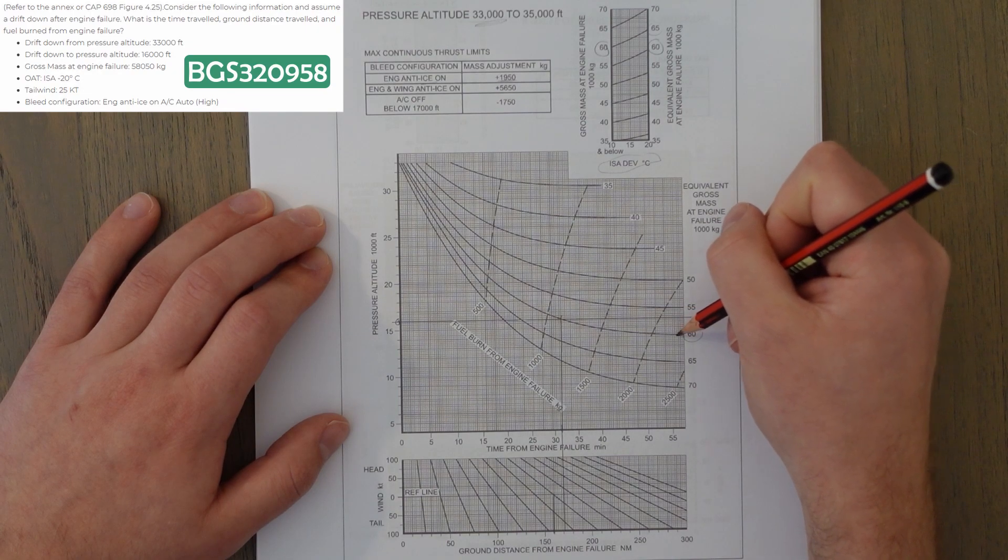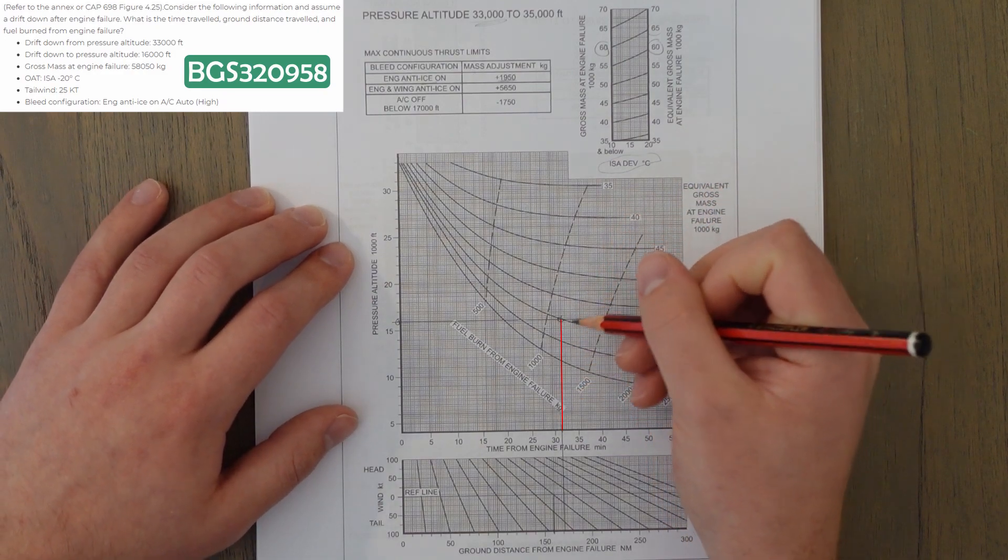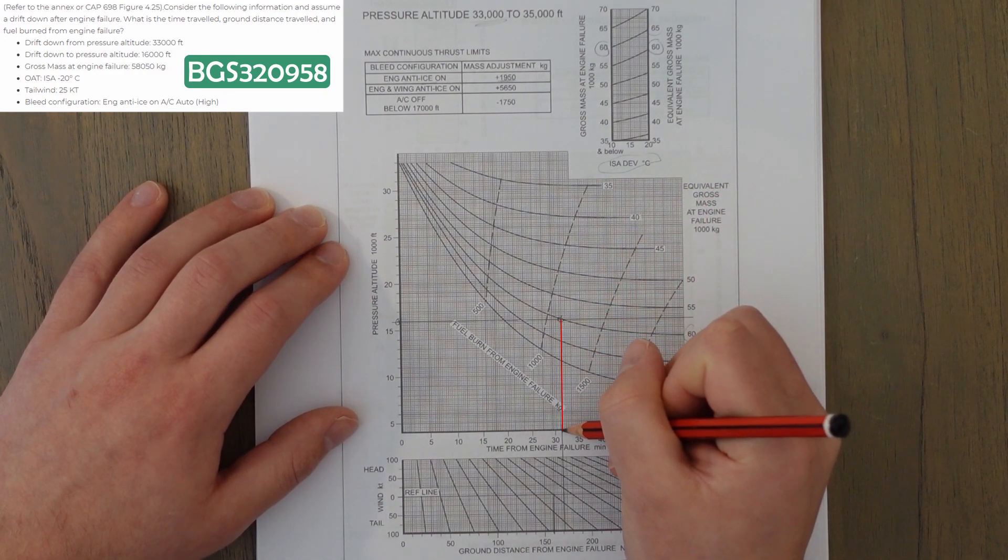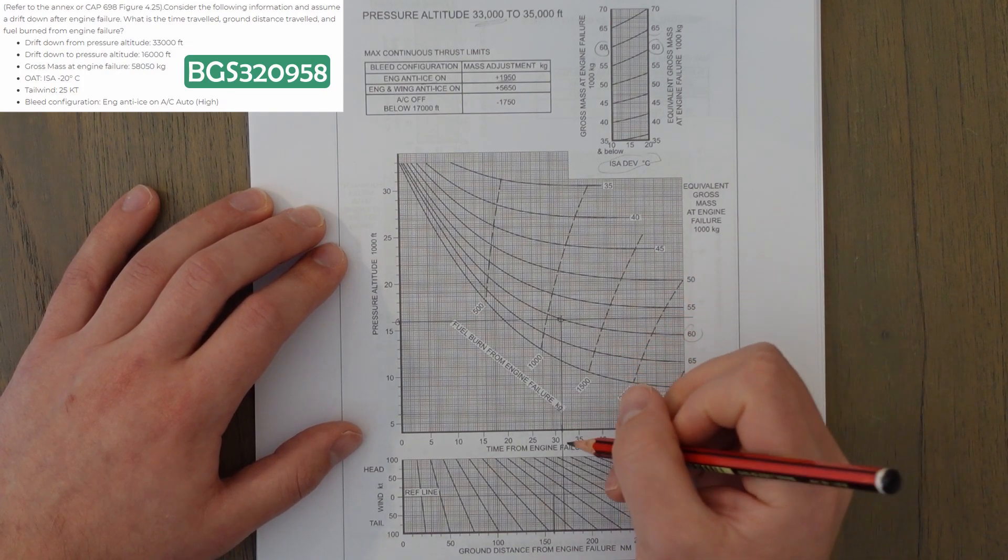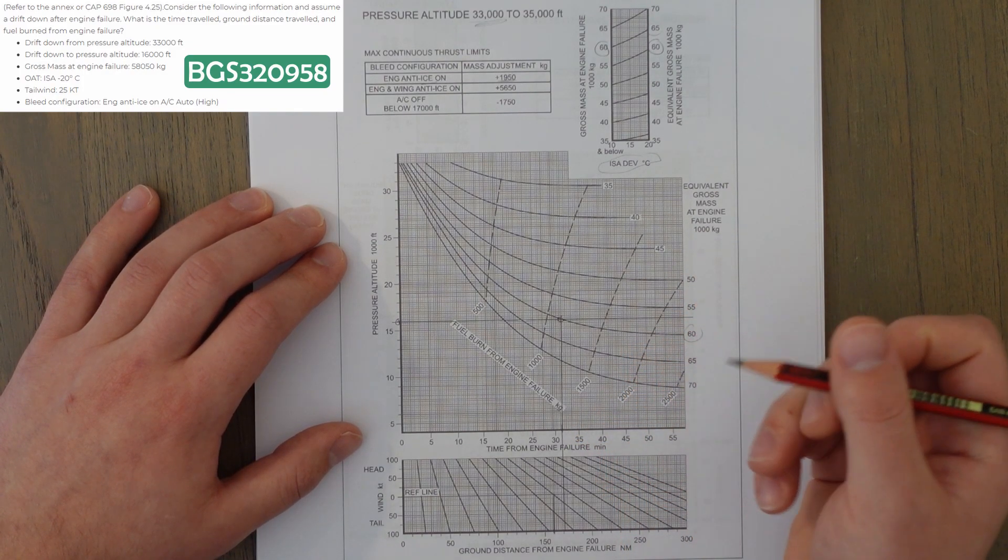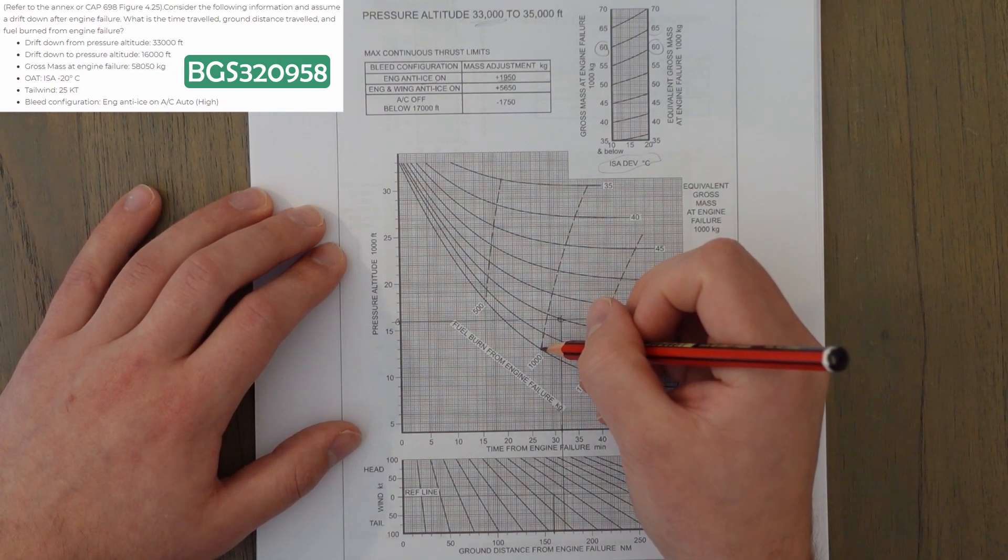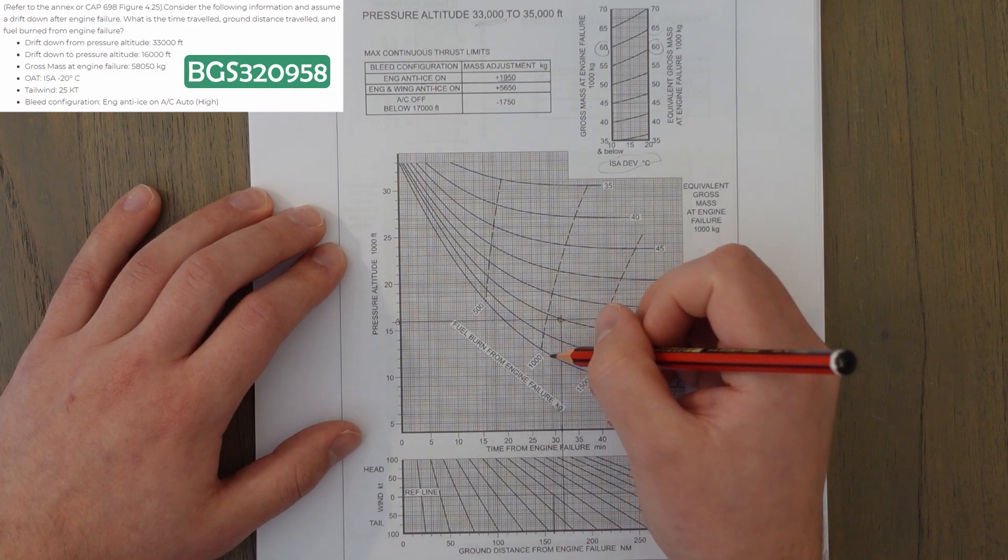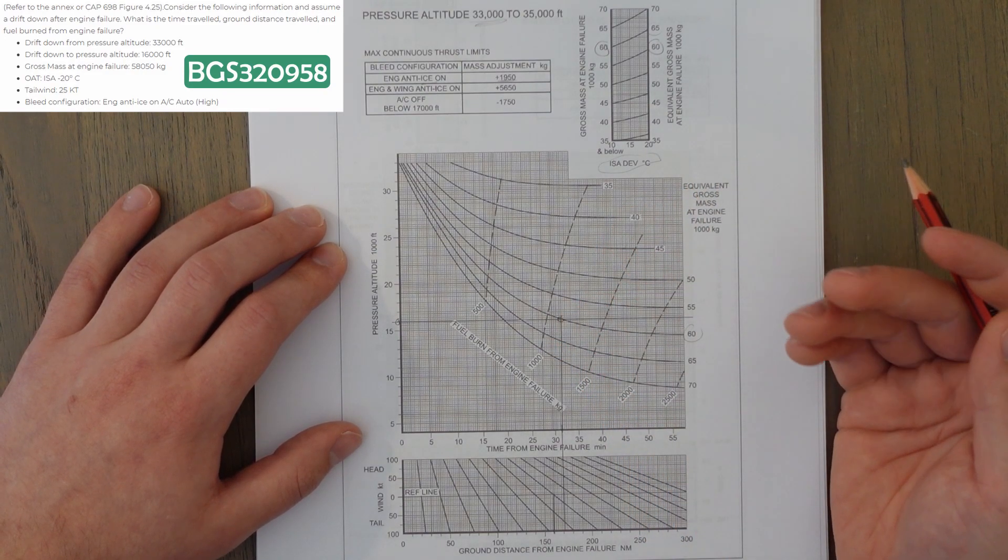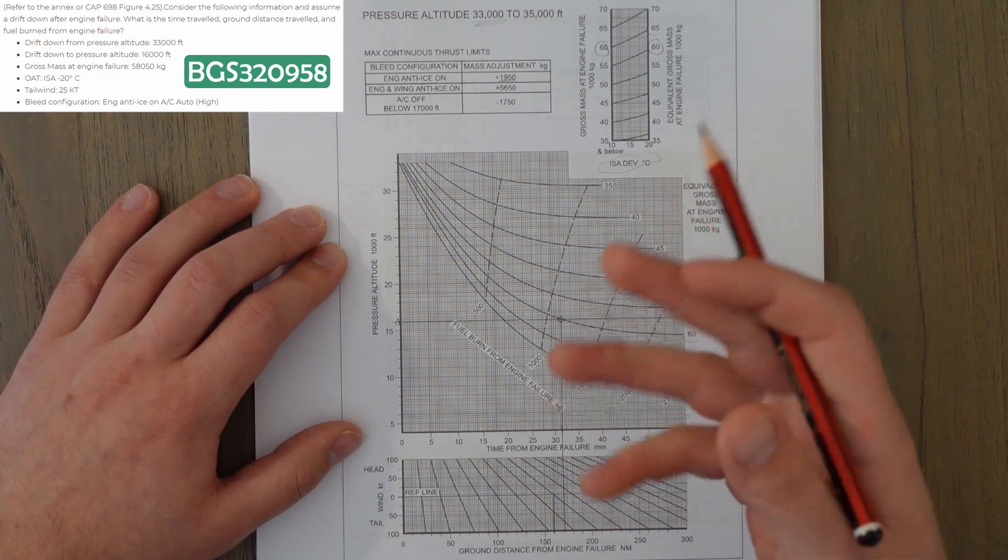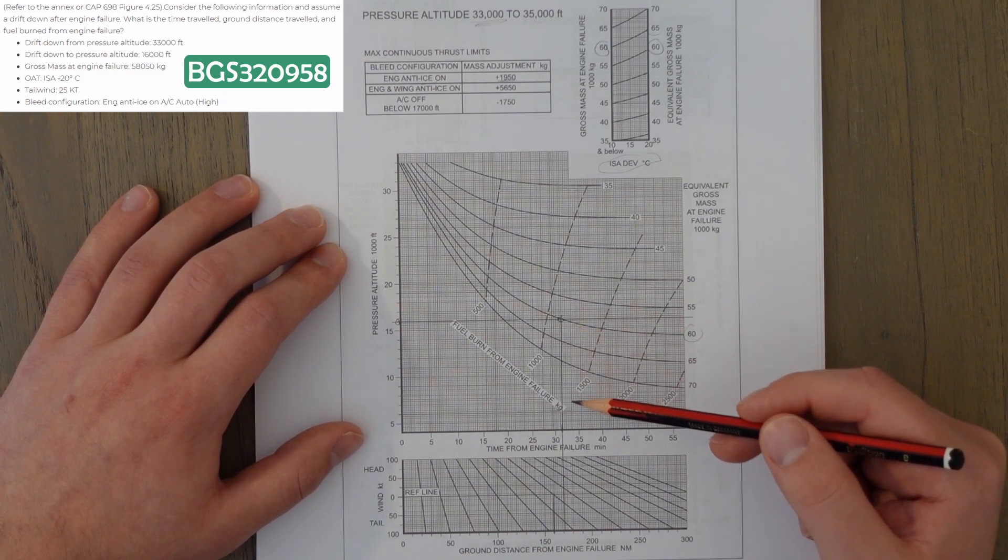That means that we can find out a value for the time, which looks at about 31, 32 minutes, around that sort of mark. And we have a fuel burn down the side of about halfway between 1,000 and 1,500. Let's call it 1,250 for argument's sake. So, we've got two values. We need to find a third one, which is our ground distance covered.